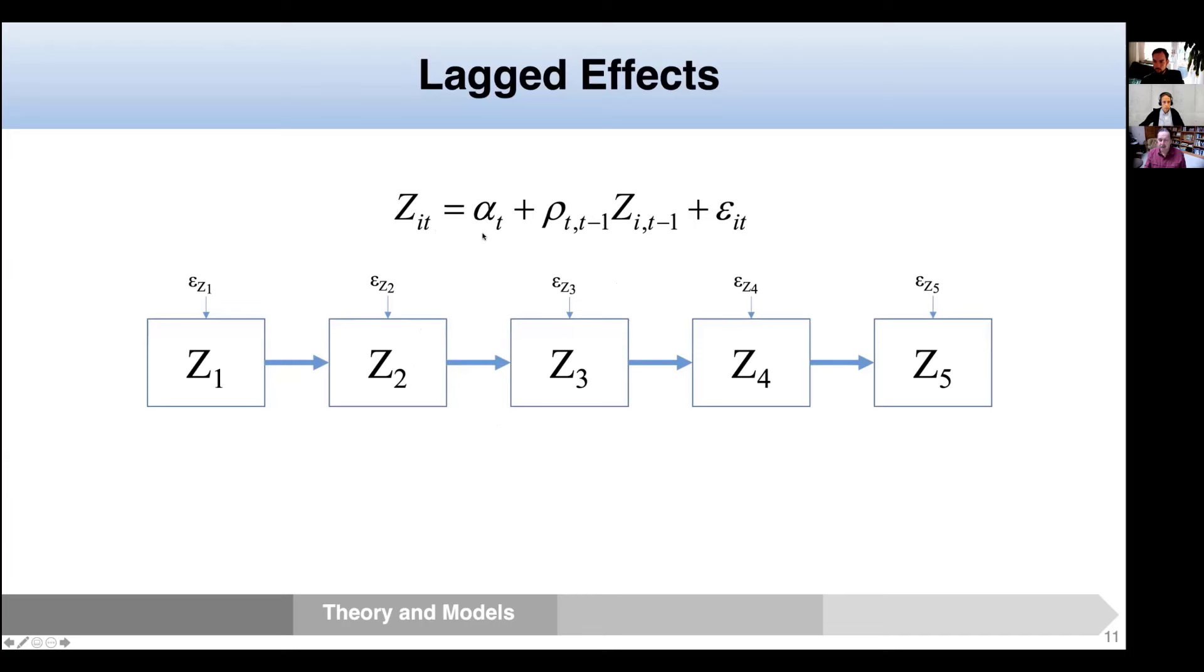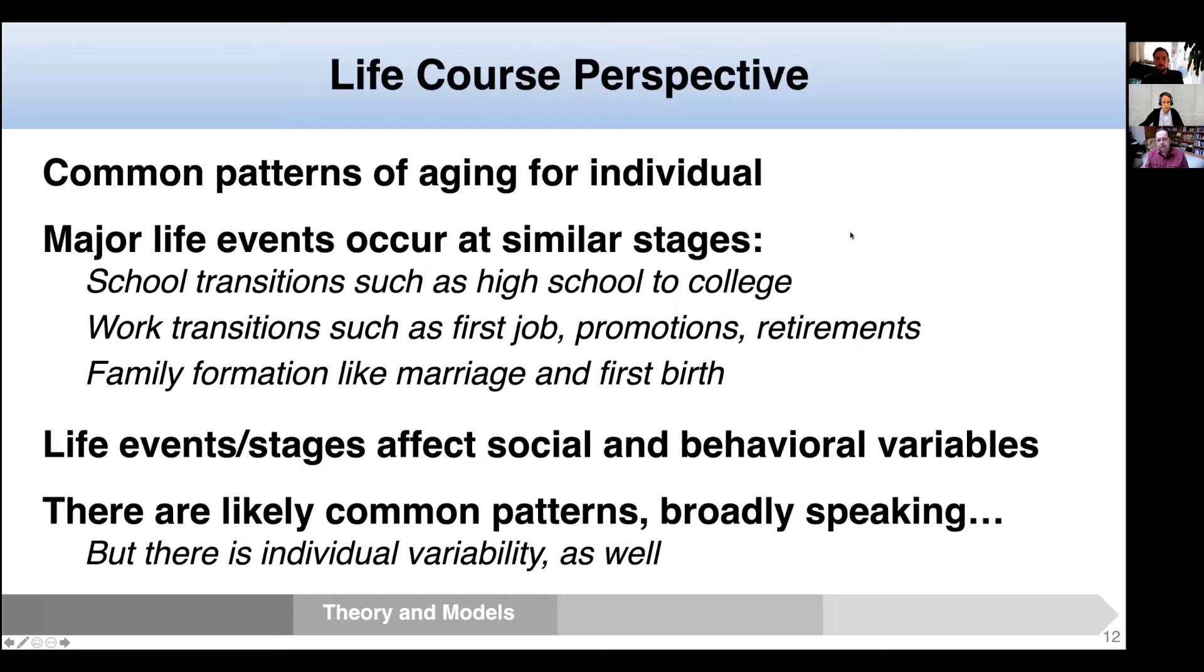This is a path diagram representing that for a linear model. ZIT is the same. The time-varying intercept is the same. Row is the autoregressive coefficient. It gives the impact of the lag value of Z on the current value of Z, and epsilon-IT is still capturing all those other influences on Z that aren't explicitly in the model.